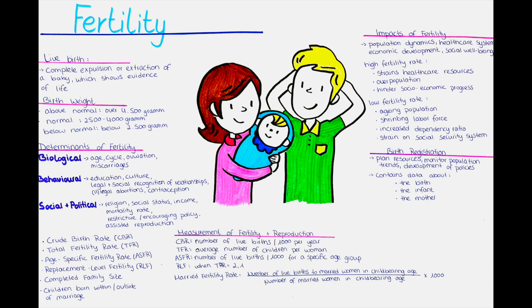We can classify births by the timing they occur in or the birth weight. A normal birth weight is between 2,500 and 4,000 grams. A low birth weight is below 2,500 grams, a very low birth weight below 1,500 grams, and an extremely low birth weight below 1,000 grams.